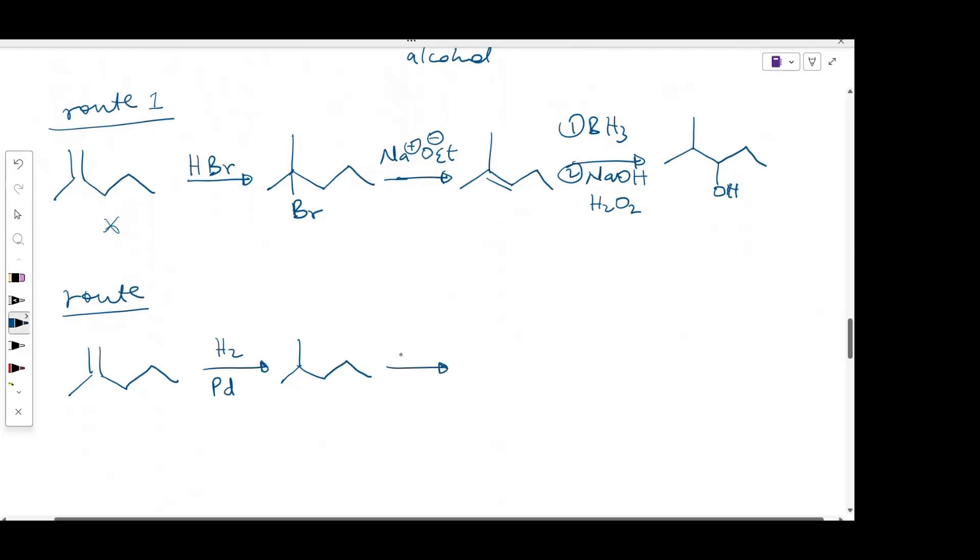And from here, I can make the alkyl halide by reacting the alkane with bromine and light. So through radical bromination, I'll form this product, which will be the major product.